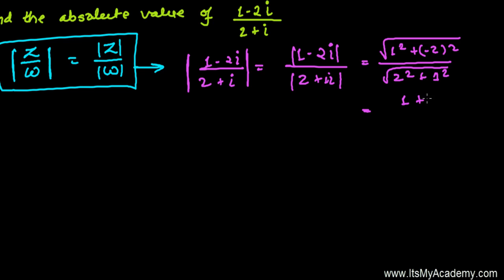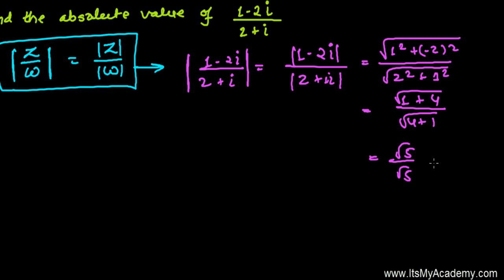So further, it's 1 squared — that's 1 — and minus 2 squared — that is 4 — inside the root. And here again, 2 squared is 4, and 1 squared is 1. So we are getting root 5 over root 5, and finally we're getting 1. So the absolute value of (1 minus 2i) divided by (2 plus i) is 1.